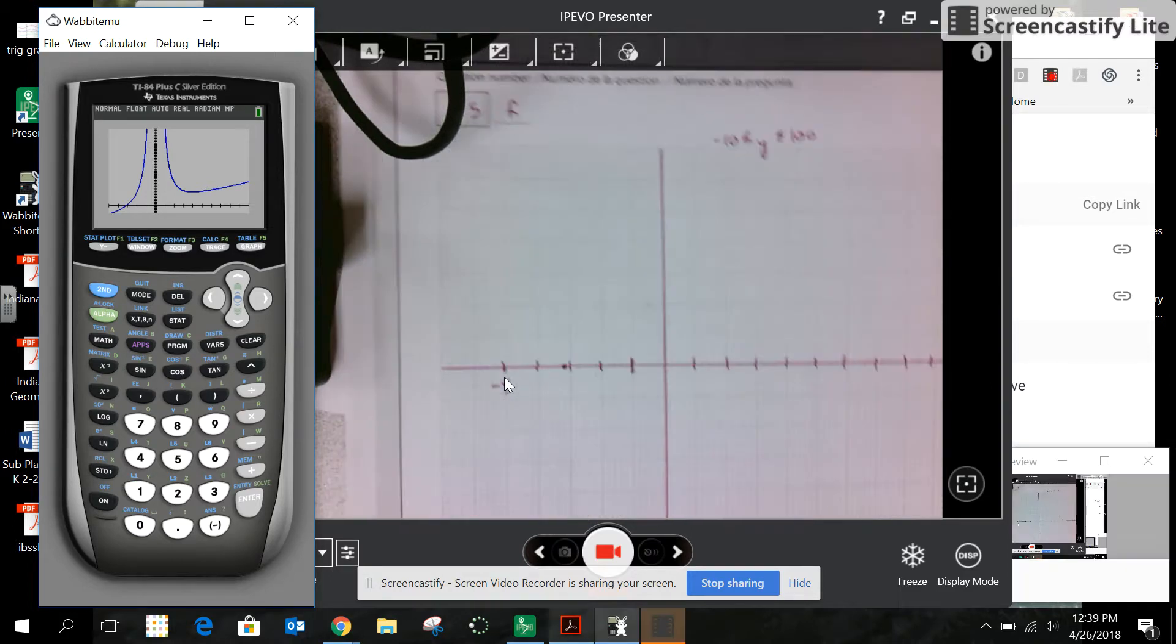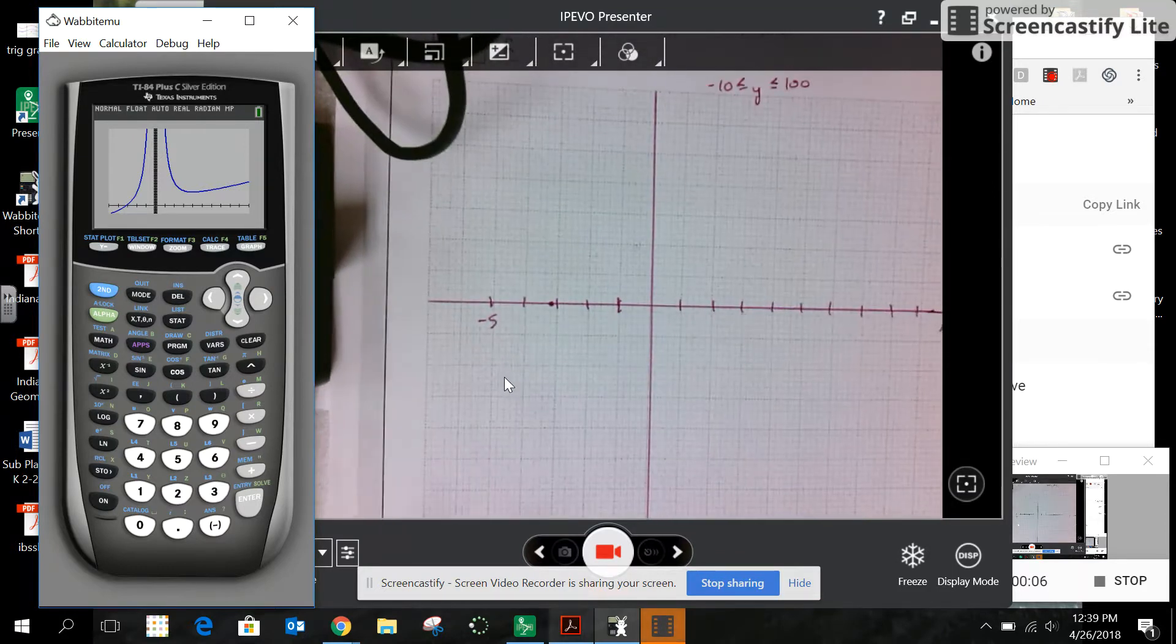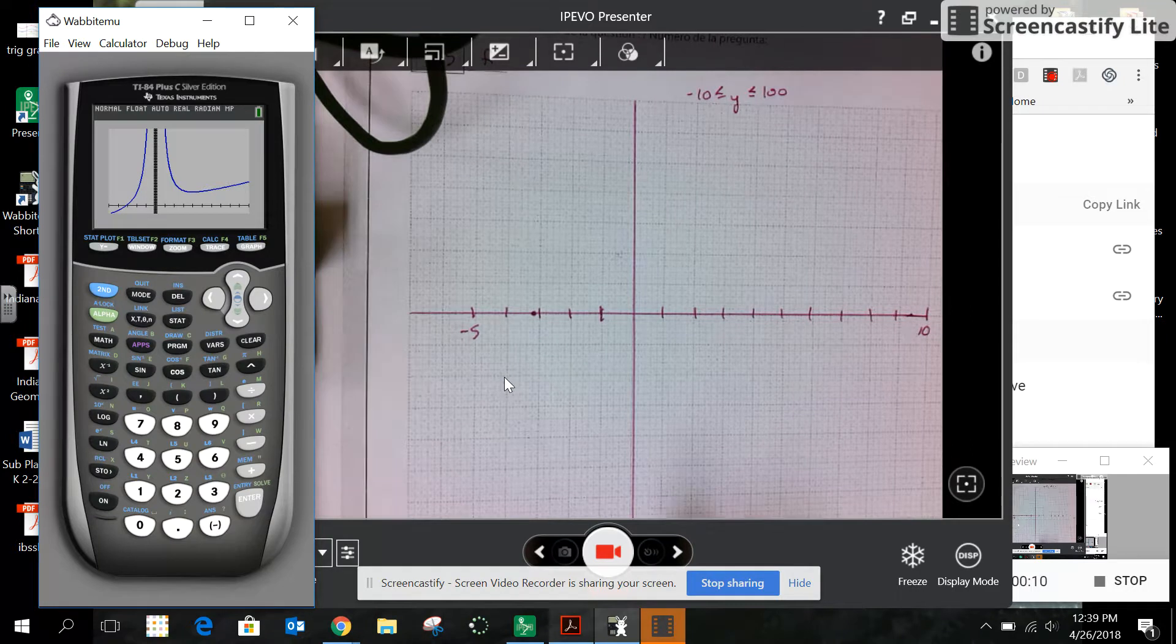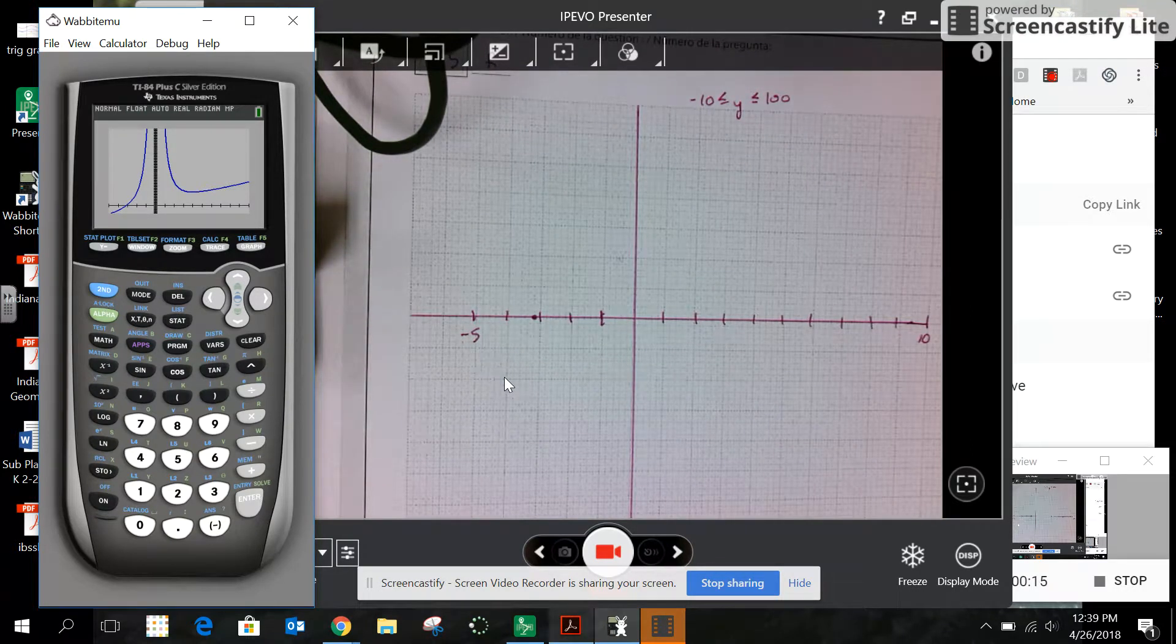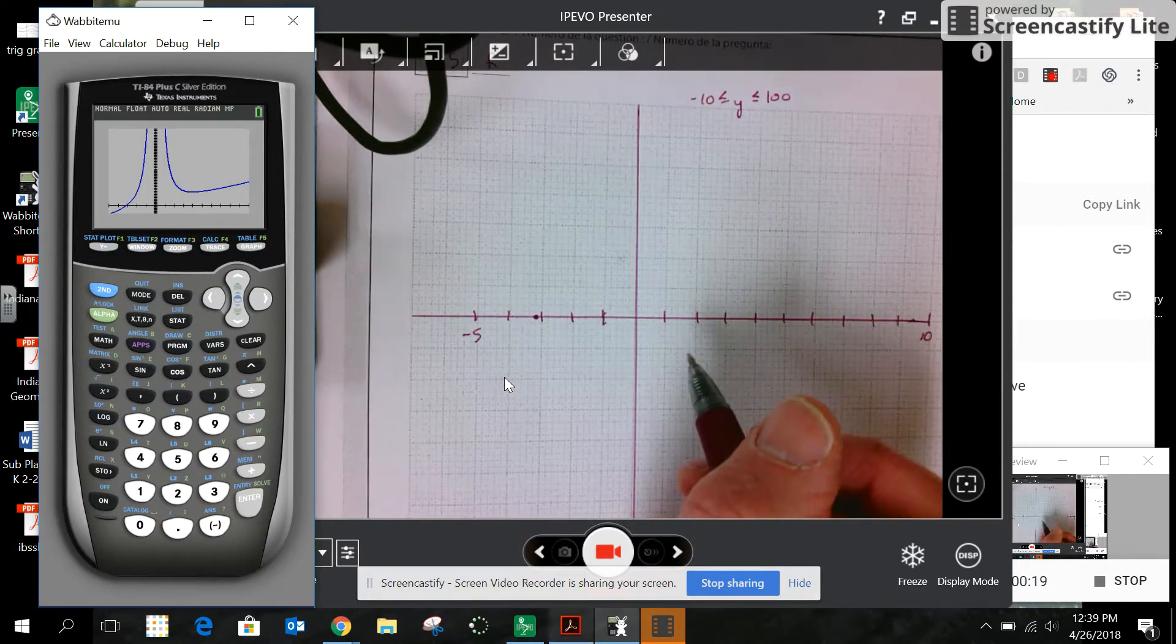I want to finish this problem on graph paper now. I made a graph using a straight edge to make the axes and labeled negative 5 to 10. I made my own scale and y is going from negative 10 to 100. Pick whatever scale you want.